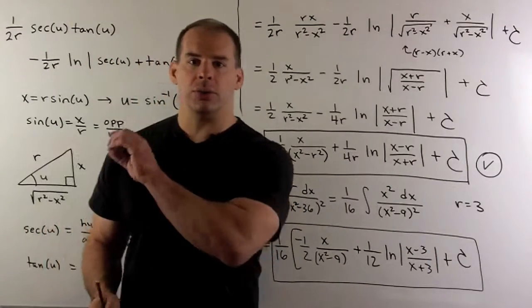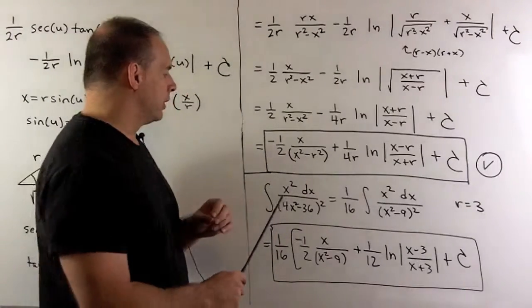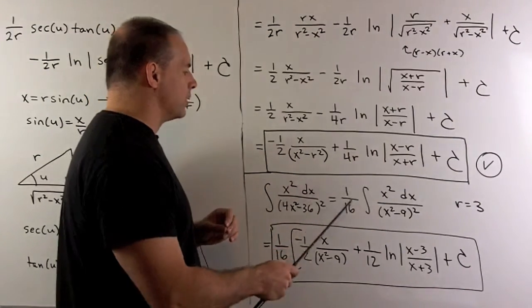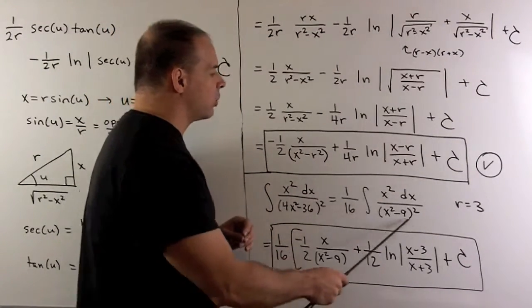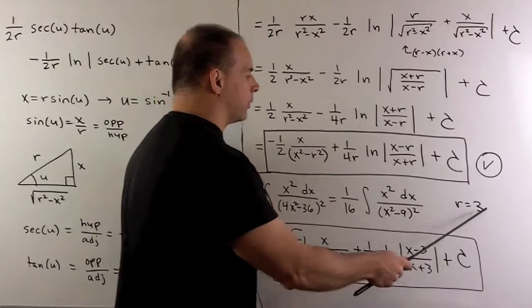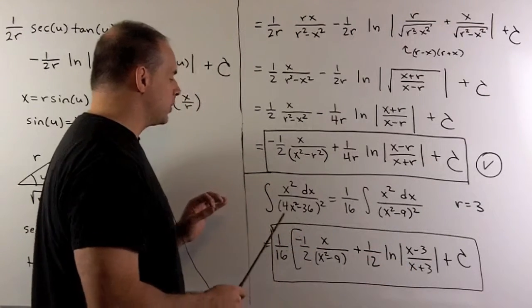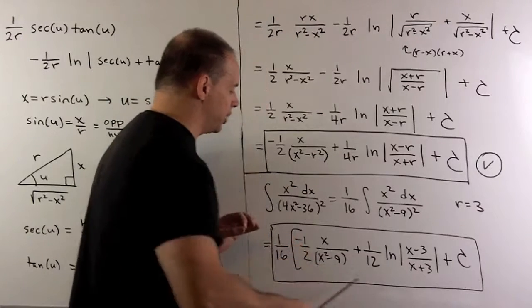Now, if we go back to the original problem, okay, we factor out 4 twice to get 1/16th. We have this integral. Here, we have r equal to 3. So, when I substitute, we wind up getting this answer here.